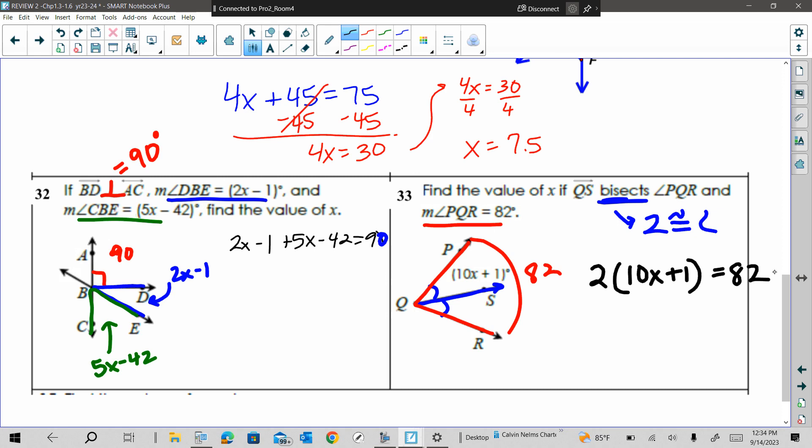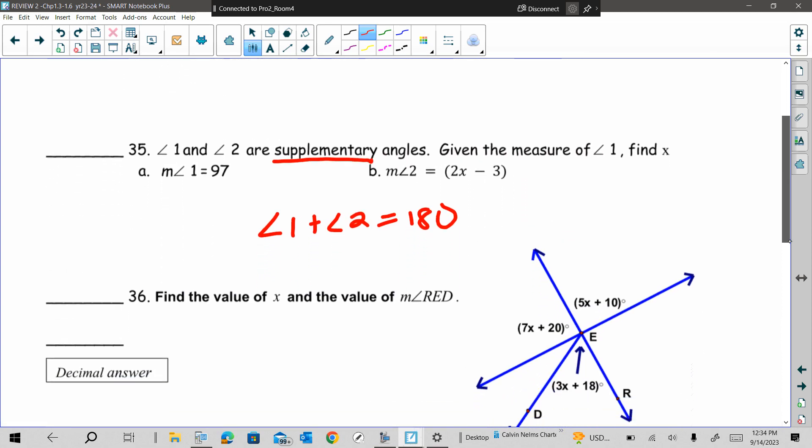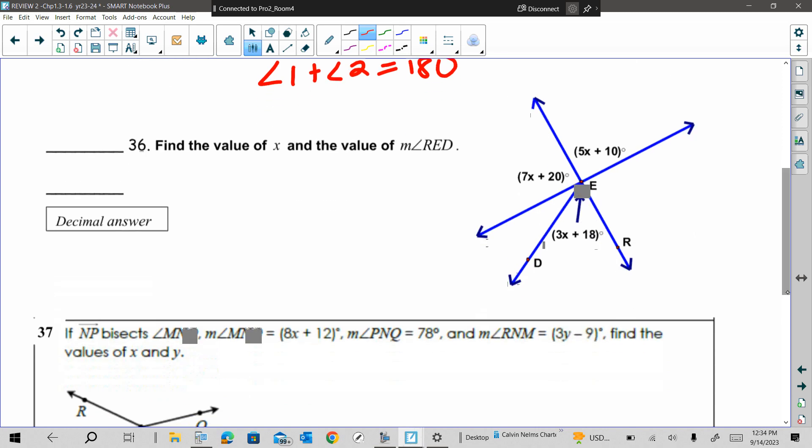The last page is just more algebra. I know they don't give you pictures for all of them, but use your keywords. Like on 35, supplementary - what does supplementary mean? 180. So angle one plus angle two is going to equal 180, and that will help you set up the equation. Tomorrow's the test. I will post a partial key and some flashcards to help you study on Teams. Just check Teams. I'll send a reminder to check Teams.